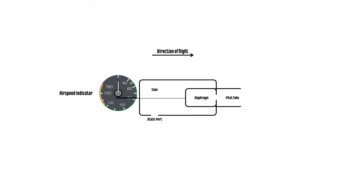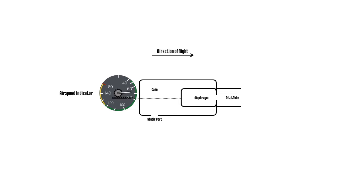The airspeed indicator senses dynamic pressure by measuring the difference between static pressure inside the case and total pressure inside the flexible diaphragm. Higher dynamic pressure expands the diaphragm like a balloon when the aircraft speeds up, and shrinks the diaphragm when the aircraft slows down.